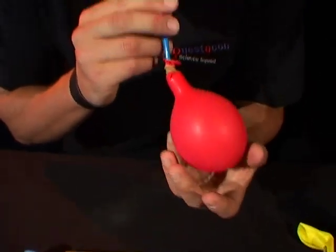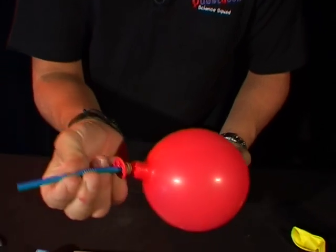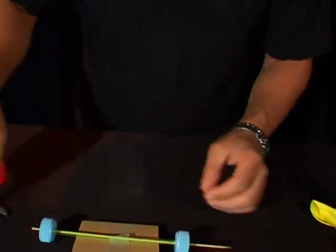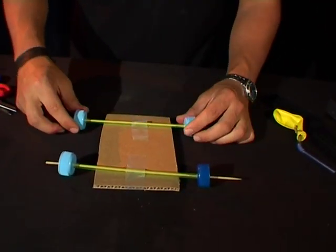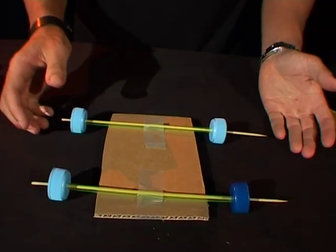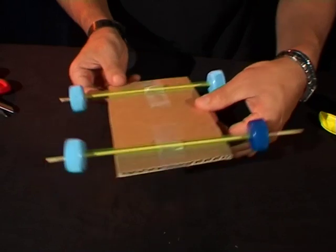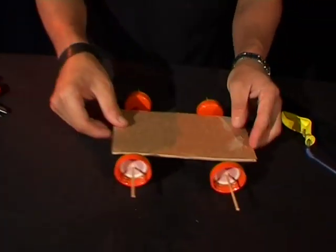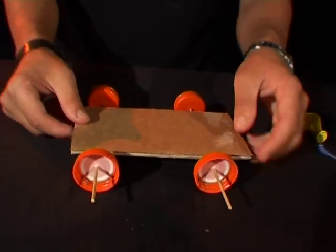It should end up looking something like this. You should be able to blow it up and no air gets out of it. Alright, now back to your wheels. It takes a little bit of working out to try and get these straight so the car moves forward nicely. So I've made one a little bit earlier which I'm sure works. Here it is, it's a beauty, isn't it? Nice orange wheels.